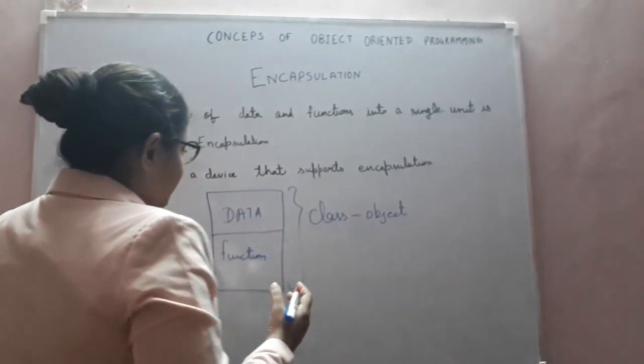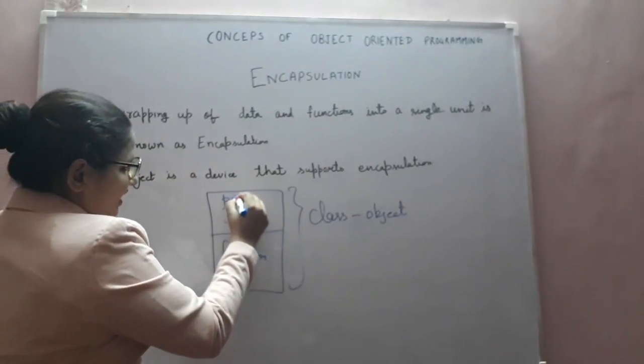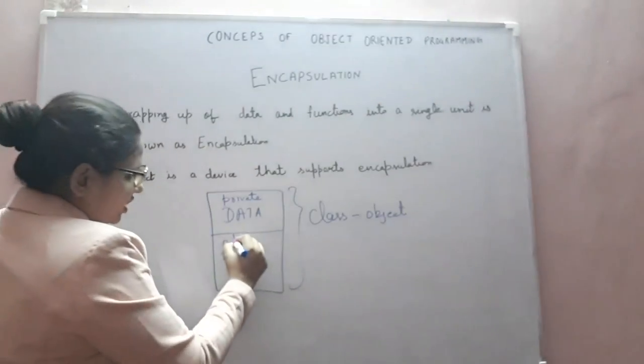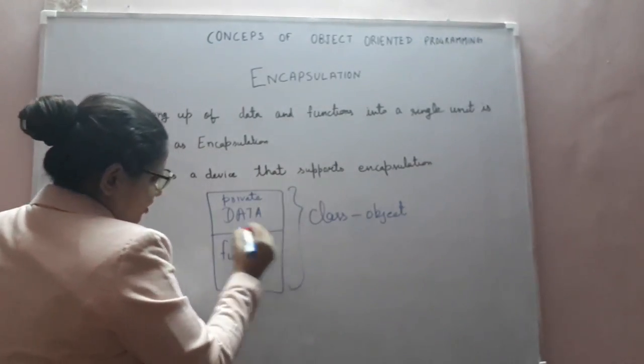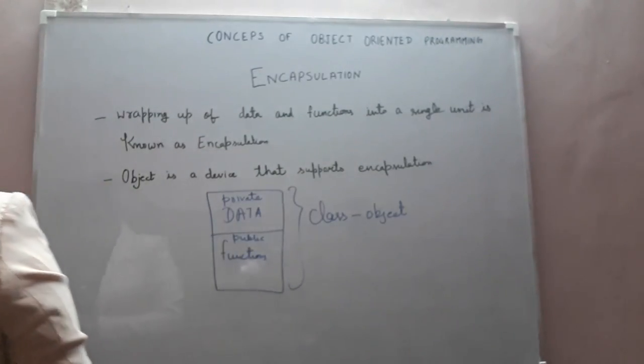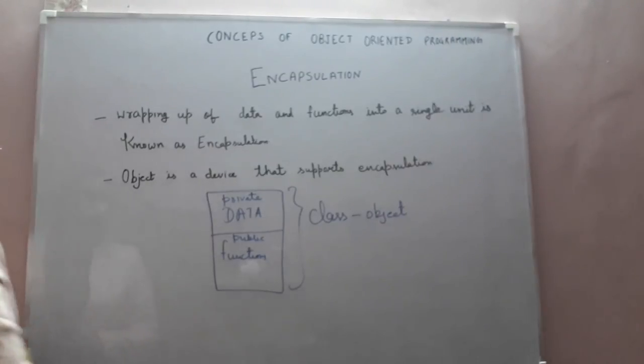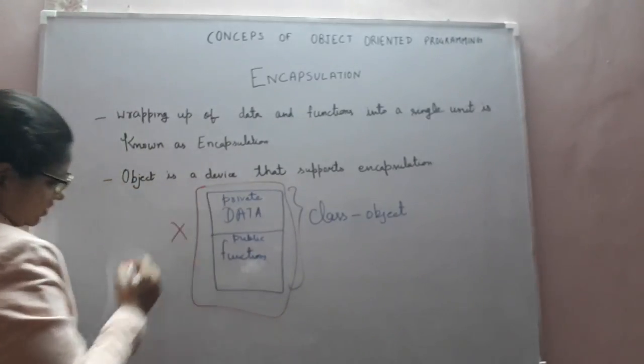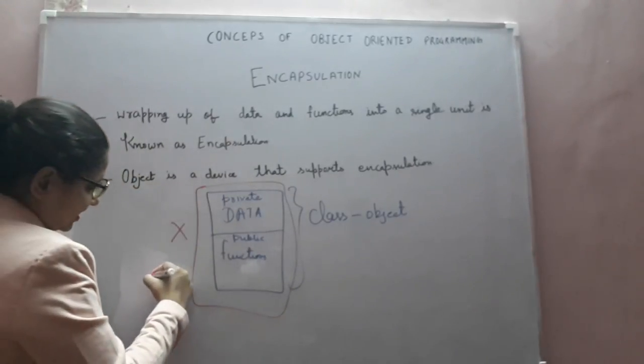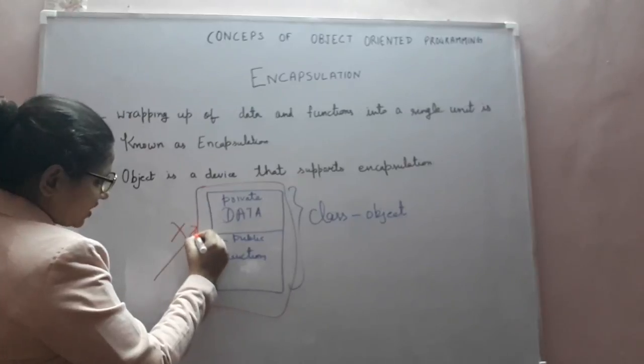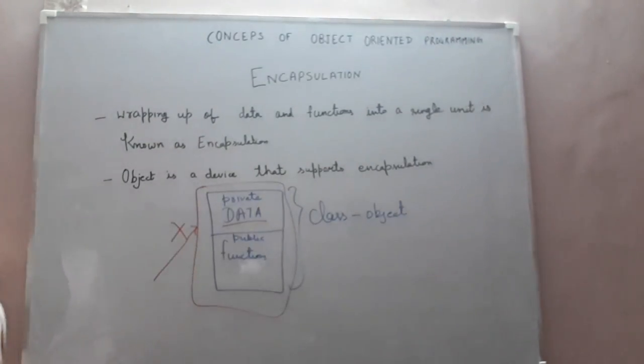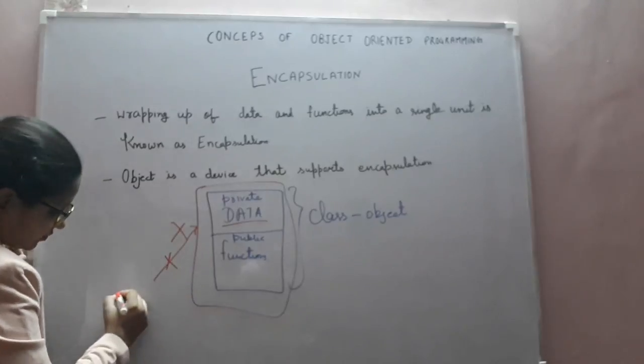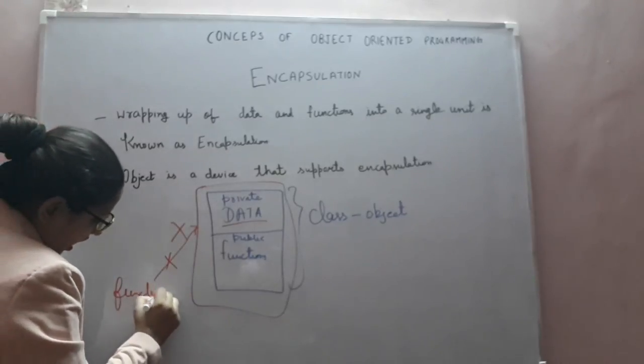Most of the time we keep data in the private section and function in the public section. What does it mean? It means access to data outside this box is not allowed. If any other outside function wants to process the data, then this processing is not allowed.